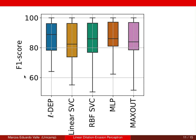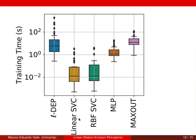Here we show the box plot of the F1 score from the experiments. From a statistical point of view, all classifiers are equivalent. However, the L-DEP classifier yielded the largest median F1 score, while the MLP classifier yielded the largest average F1 score. Regarding training time, the linear and RBF support vector classifiers are the fastest models to train, while the L-DEP, MLP, and maxout classifiers took similar training times. In particular, the L-DEP and maxout are quite competitive.